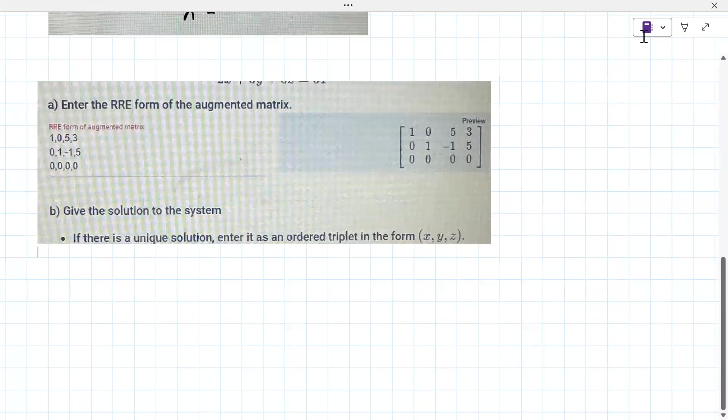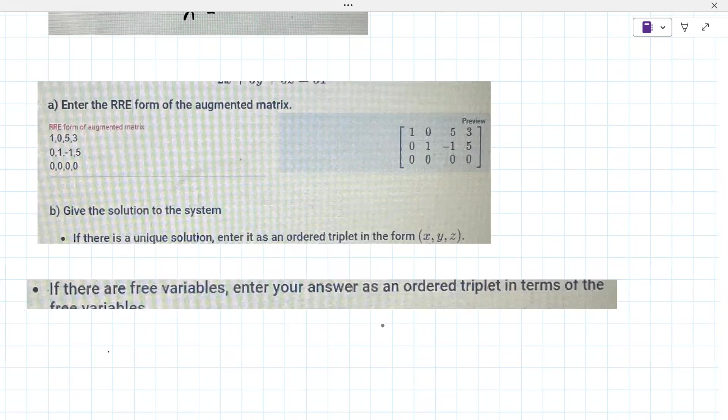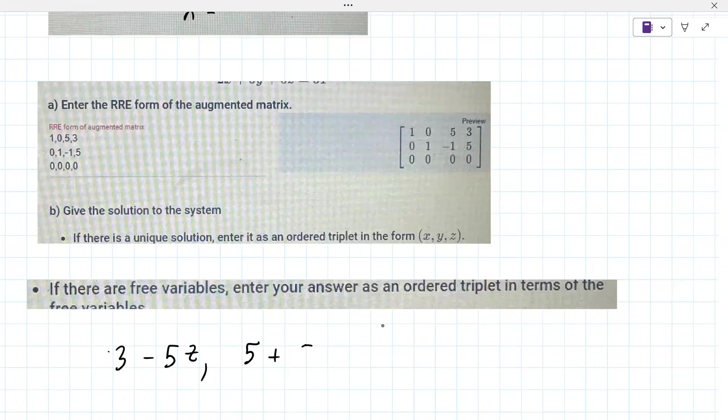The issue here is that it says how to enter the answer in terms of the free variables. Depending on the system, they could be using x or z as the free variable. Do you remember which one they used? It probably is in terms of z, so it's three minus five z comma five plus... I see it now, thanks.